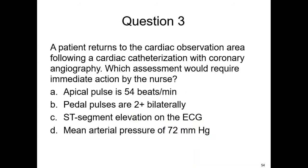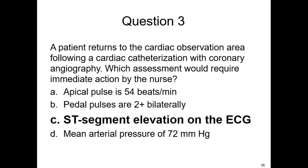Final question: A patient returns to the cardiac observation area following cardiac catheterization with coronary angiography. Which assessment would require immediate action? ST segment elevation, because that indicates myocardial ischemia or injury with either partial or total occlusion of the coronary artery. Immediate actions include assessing for chest pain, getting a 12-lead EKG, possibly giving nitro or morphine, and notifying the healthcare provider. A heart rate change would need further assessment but is not critical unless symptomatic; other options are normal findings.